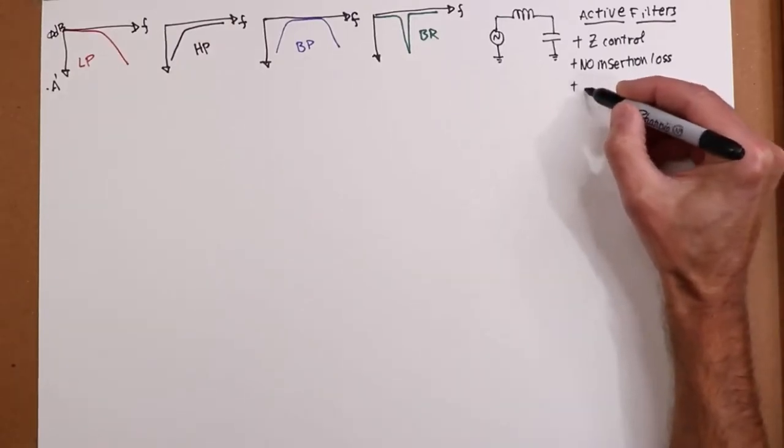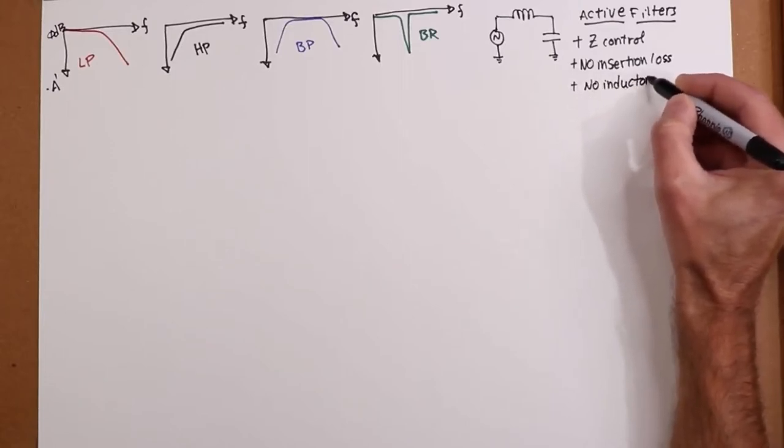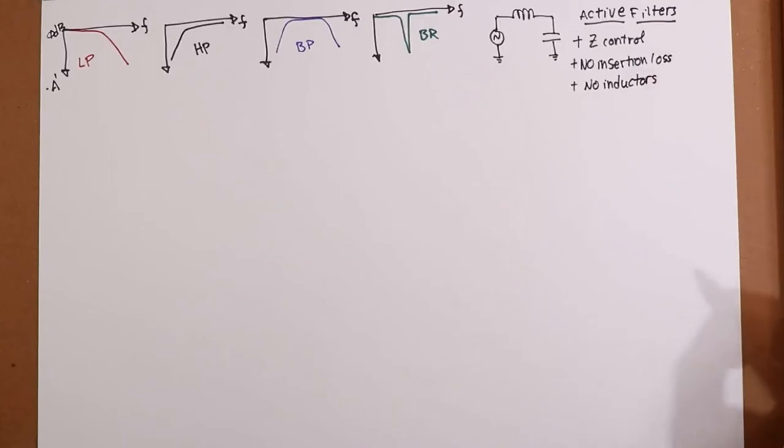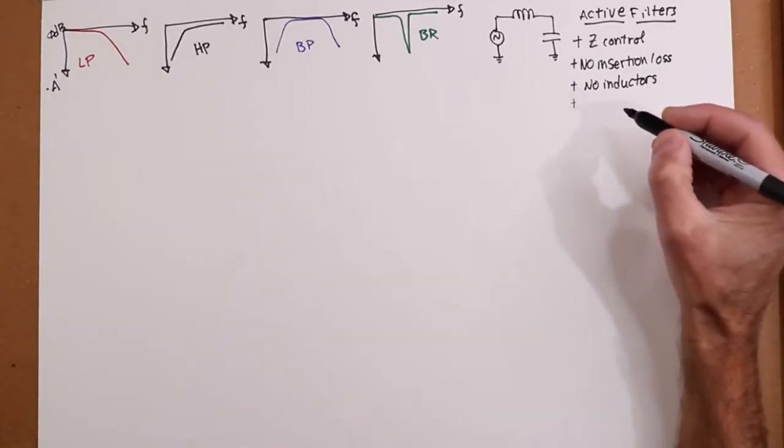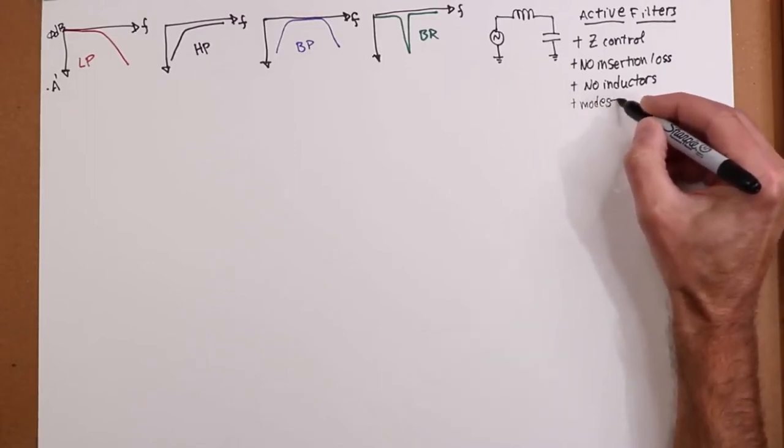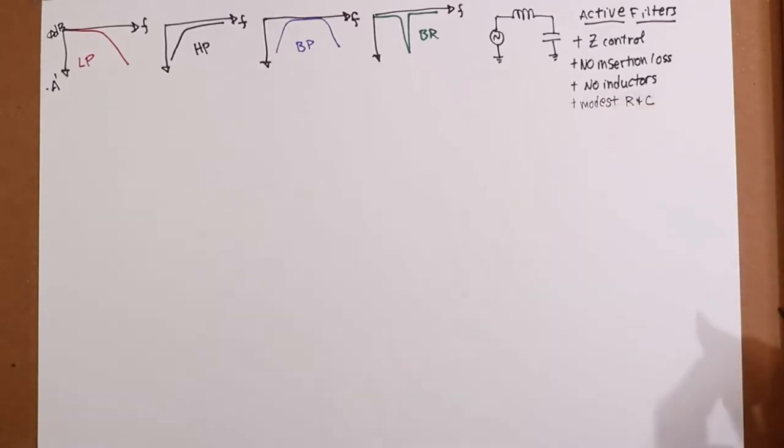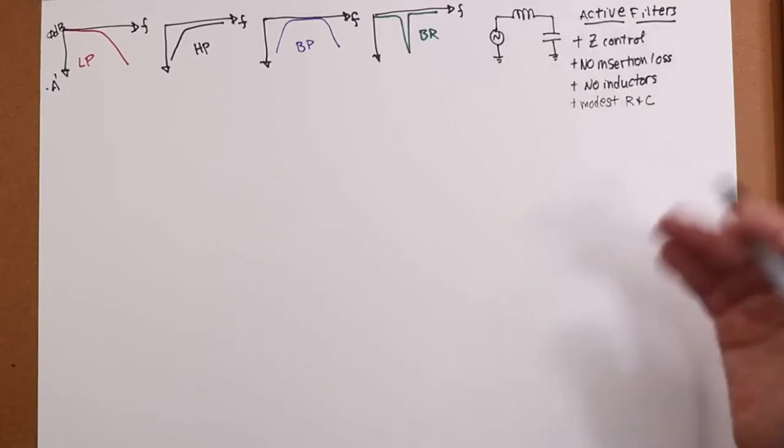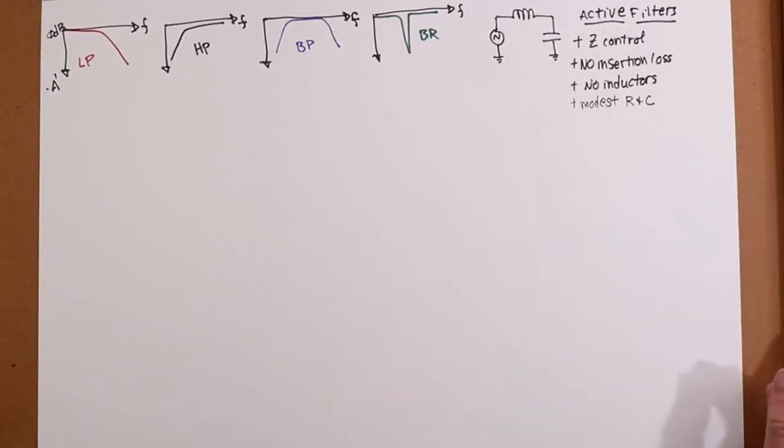A huge plus is no inductors. Inductors are the least ideal of the components that we have, right, between resistors and capacitors. So not using inductors is a good thing. Another plus is we have modest component sizes, especially at low frequencies. Normally at low frequencies and passives, you need large values, large capacitor values, for example. That won't be the case with active filters.